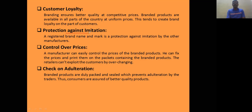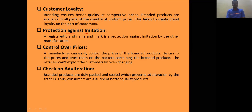Protection against imitation: trademarks, logos, and slogans are used to differentiate a product from others. Control over prices means branding allows the manufacturer to sell the product at a higher price than a commodity. However, the cost of differentiation must not be too high, otherwise the product will be removed from the market.